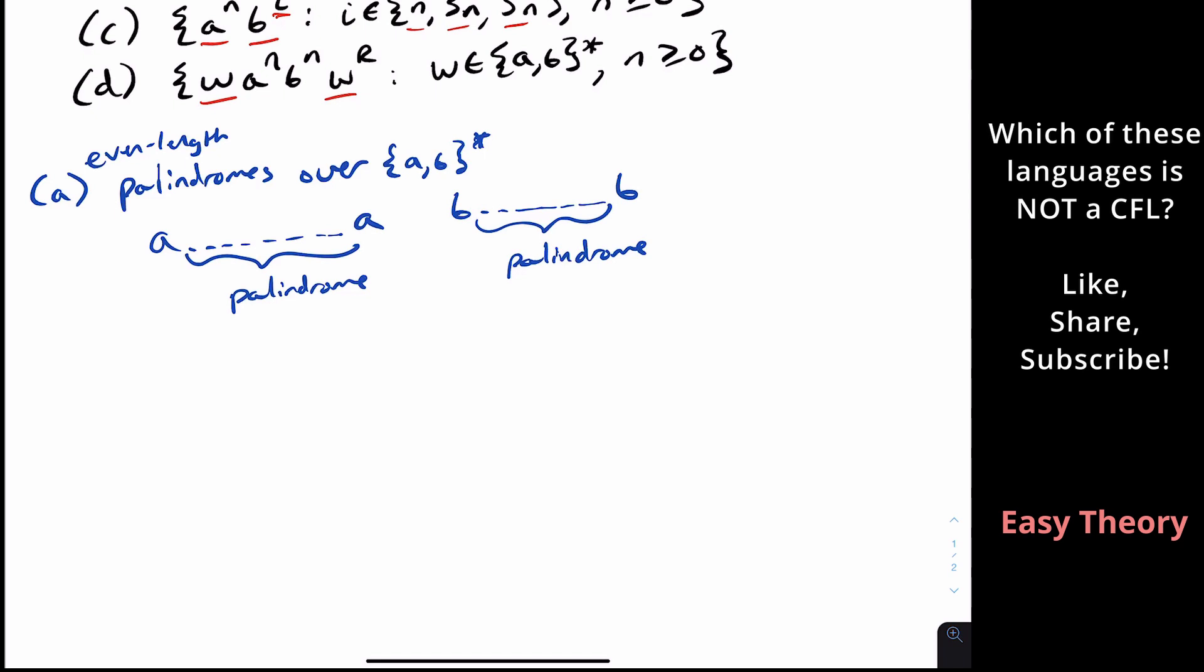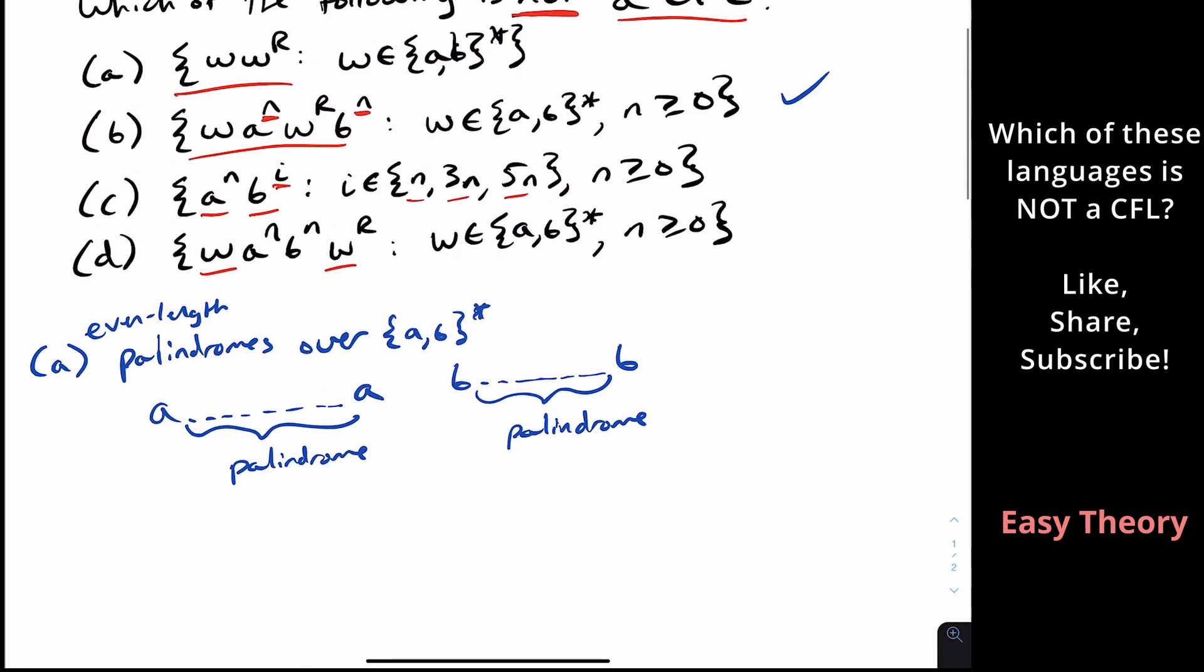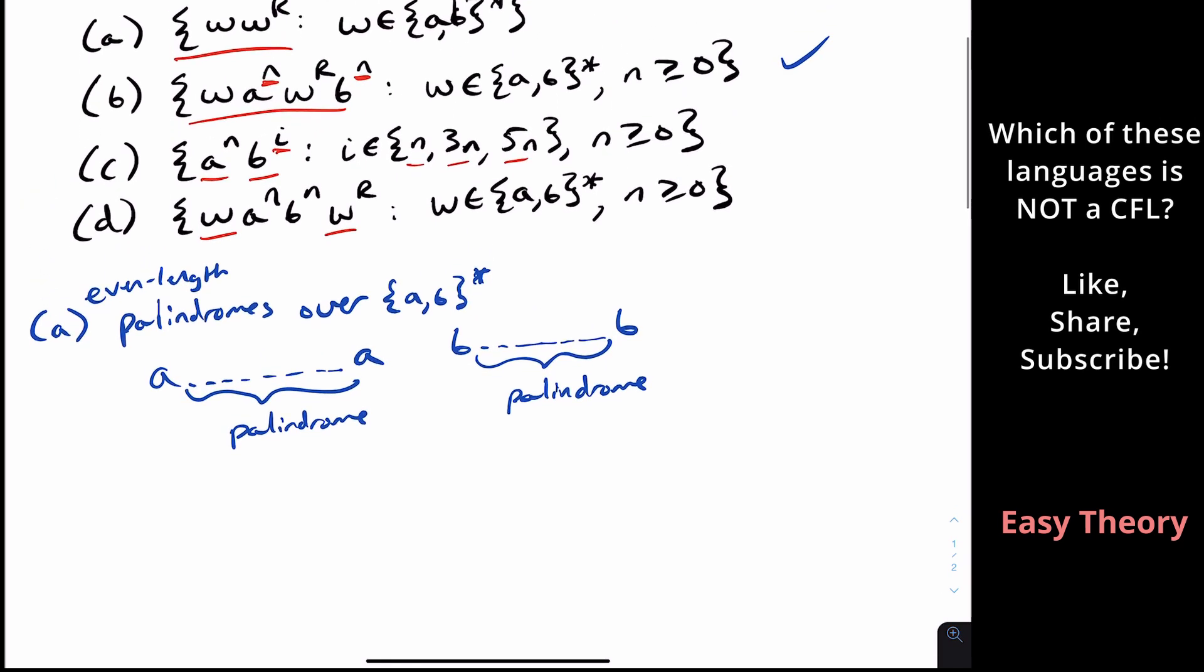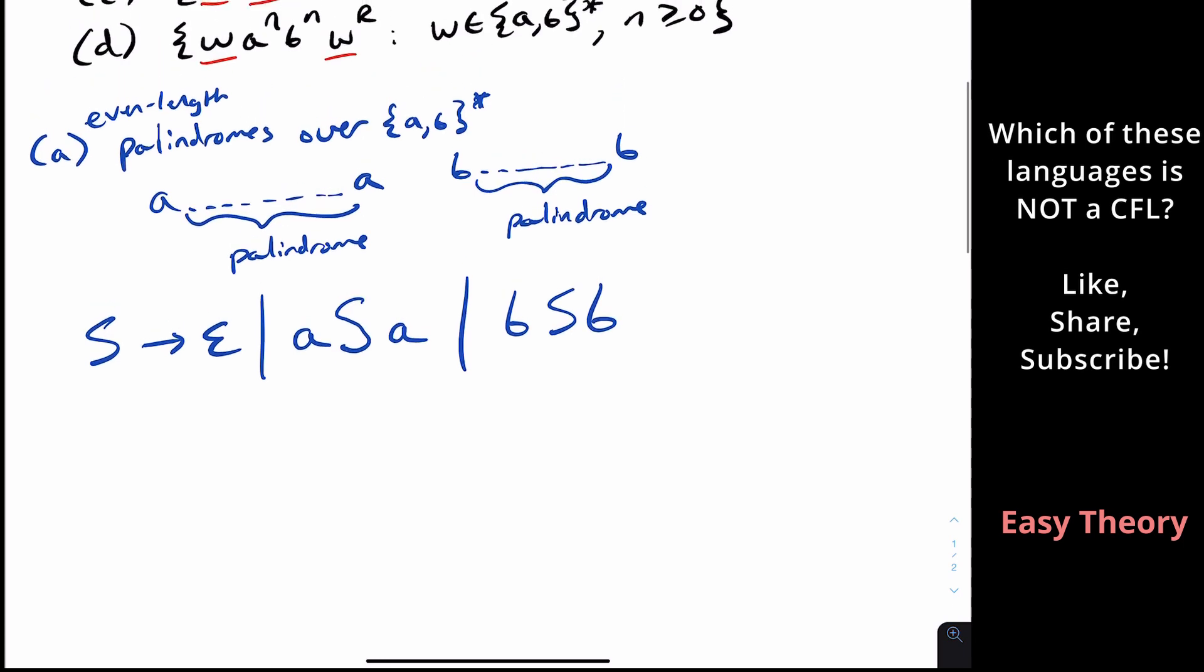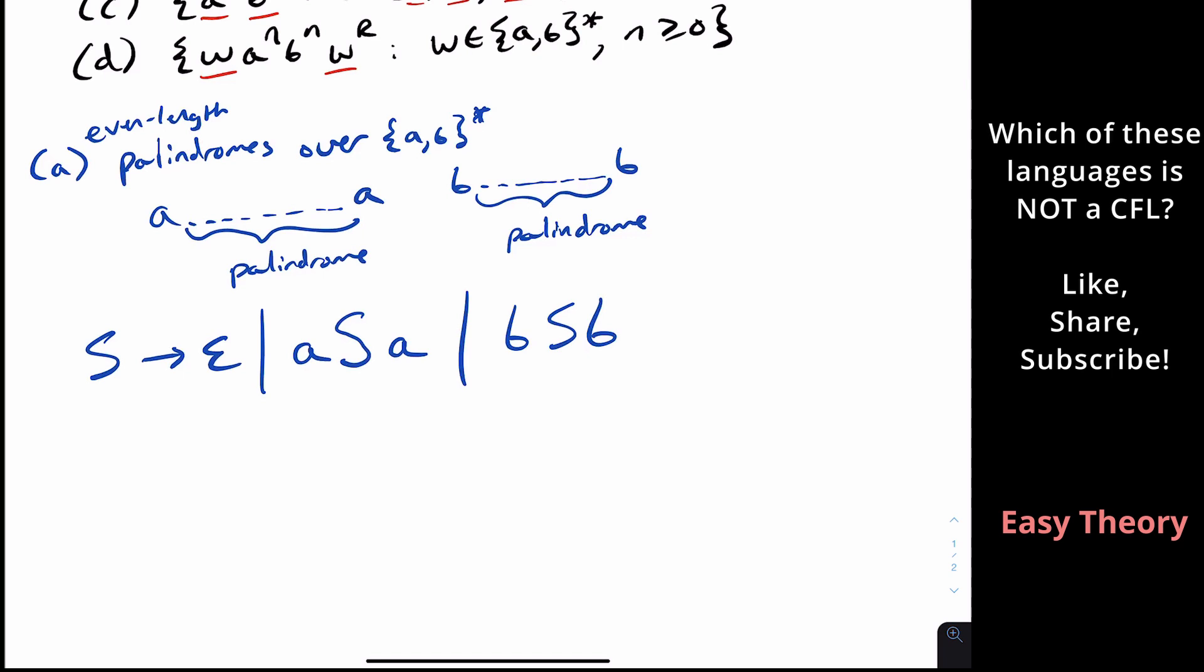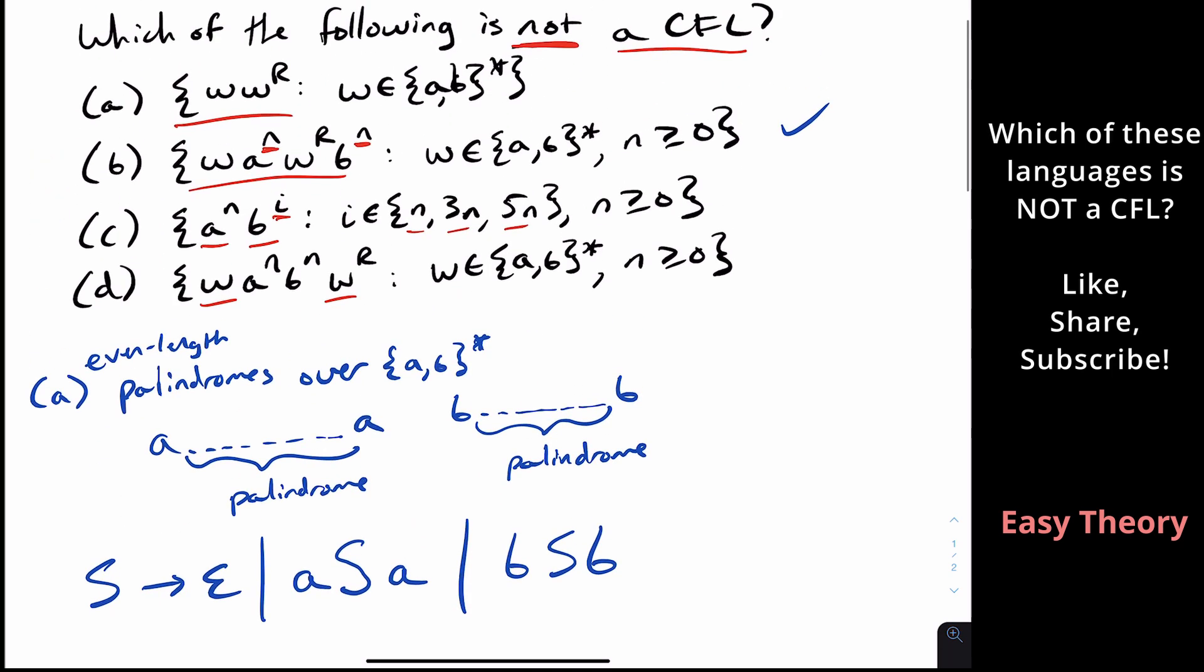So how can we make a grammar for this? Think of it as we're starting at the base case. So what is the smallest possible string we can have here? Well, it's empty. So we can have S goes to empty. And then think about the inductive cases, which are the two cases here. So we would have to generate an A. Assuming that S generates even-length palindromes, we have S here, and then A. And then similarly, we have the same thing for B. So A is context-free.